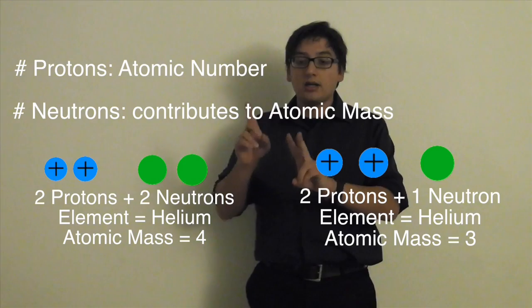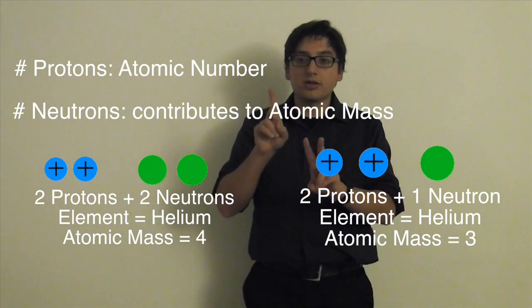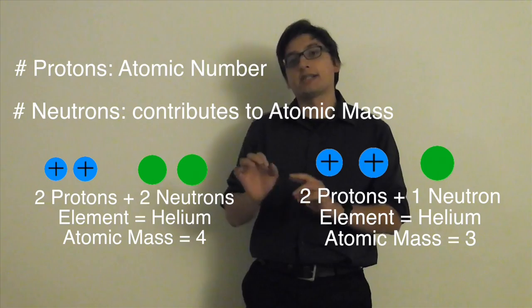but if it has one neutron and two protons, well it's still helium because there's two protons, but there's only one neutron, so the whole thing only weighs three AMUs instead of four.